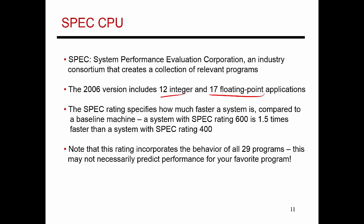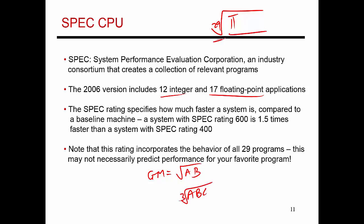You measure the execution time of a program, take the inverse to get its performance, and then multiply the performances of all 29 programs. After you multiply them, you take the 29th root of that product. The geometric mean of two numbers is obtained by multiplying those two numbers and taking the square root. For three numbers you take the cube root, and for SPEC you're multiplying 29 numbers and taking the 29th root.